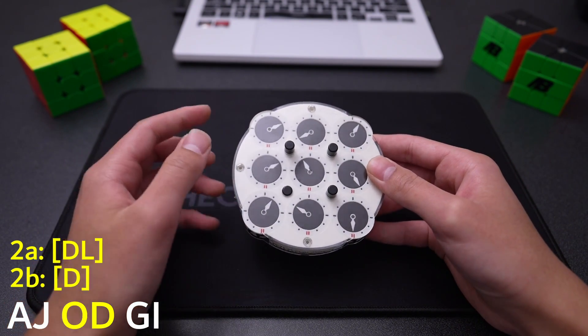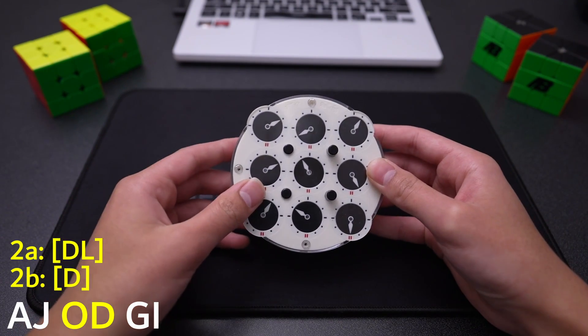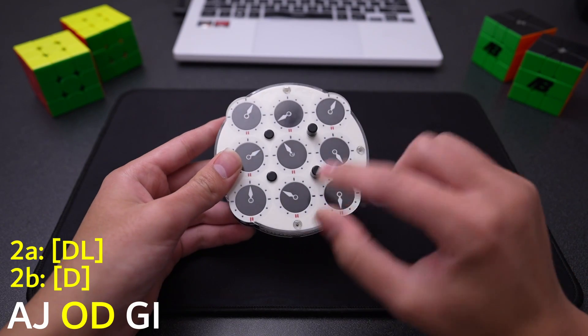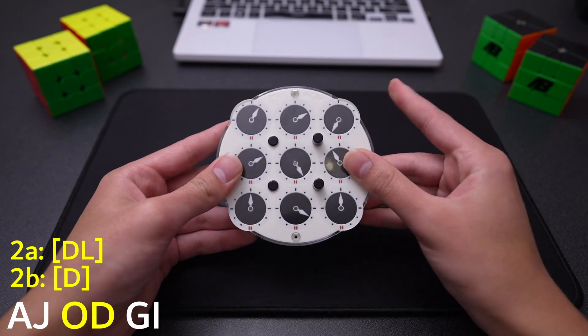Now for the second move, the reference clocks are the same, so it's still DL and D, and we had O and D, so we're going to move DL to O, and we're going to move D to D.